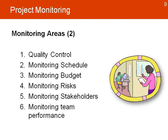The second area of monitoring looks more internally at how we're managing the project. We're looking at quality control, the schedule, the budget, risk, monitoring stakeholder relationships, and the performance of the team.